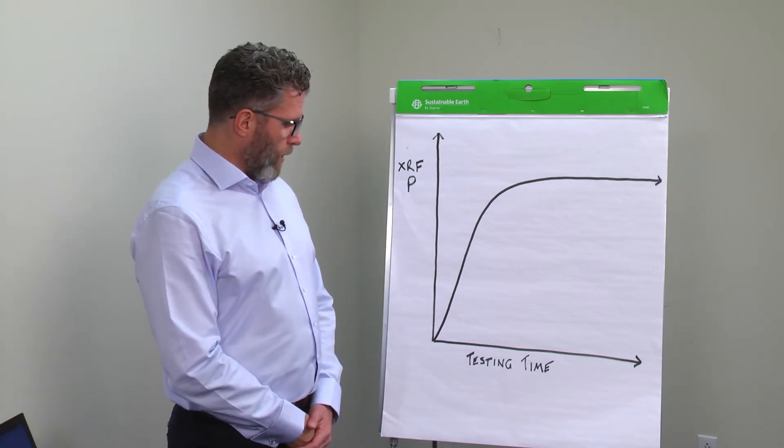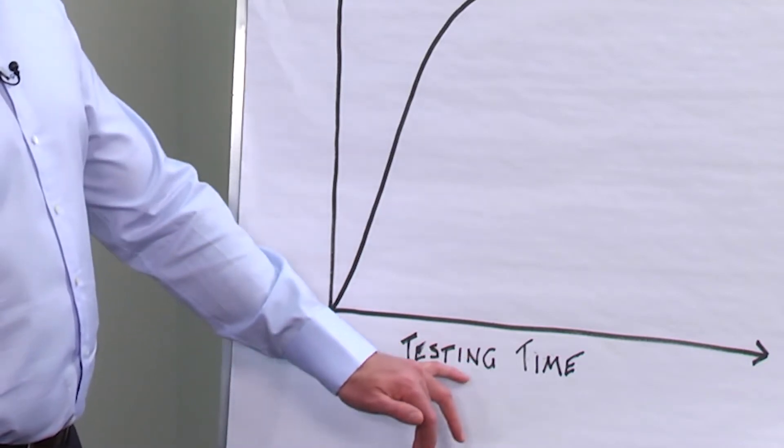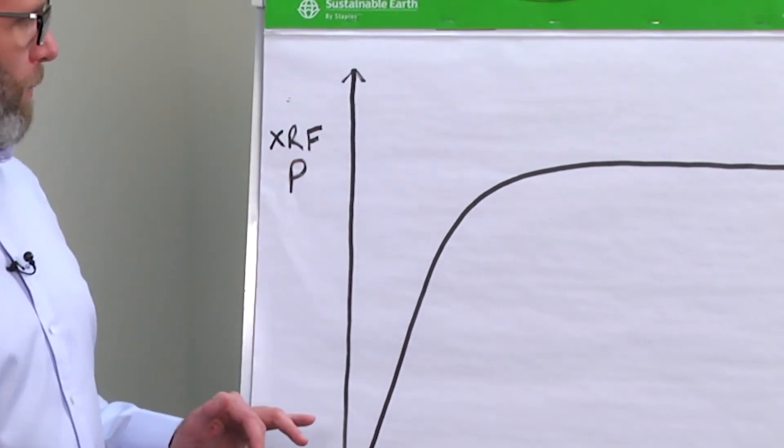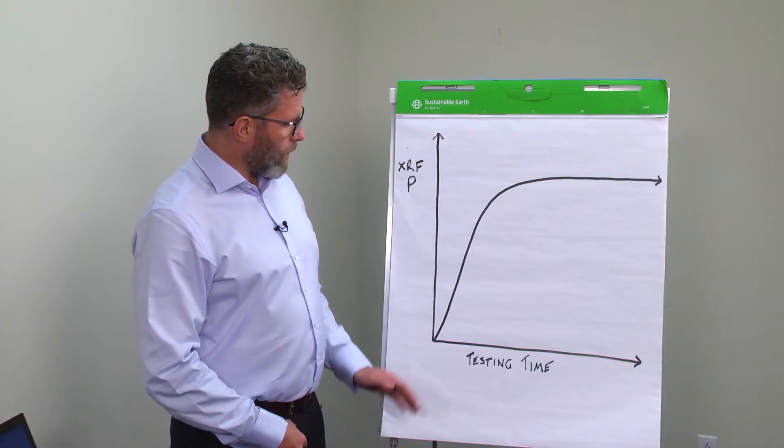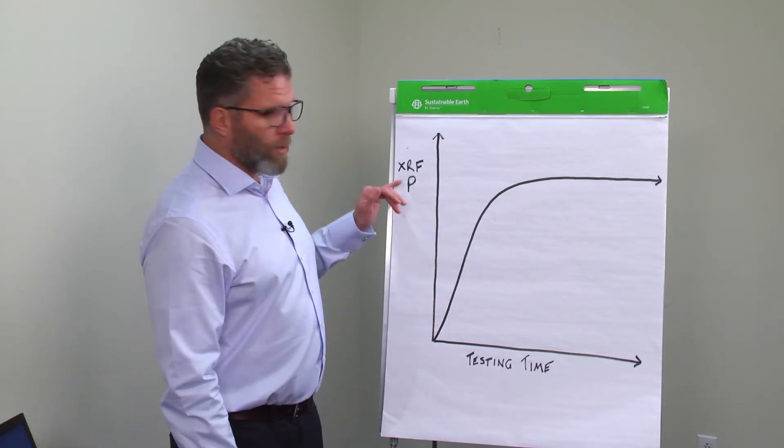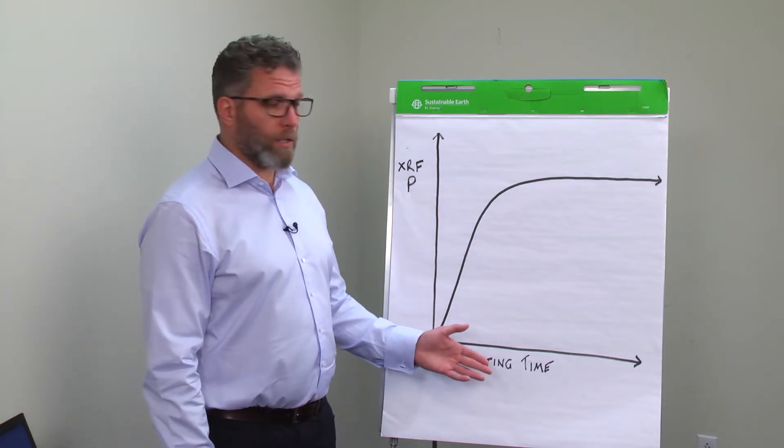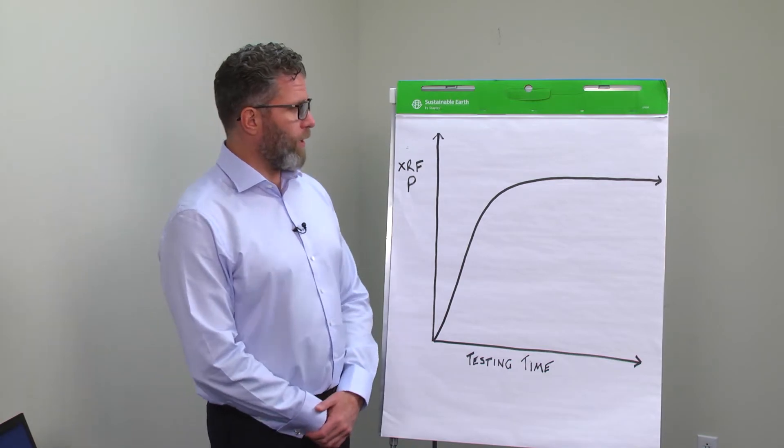is by a simple x-y graph, with x-axis testing time, and y being precision of XRF. Obviously, as you can see here, precision improves over a longer testing time, but the customer actually needs to find their sweet spot.